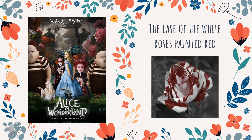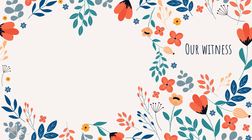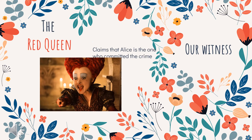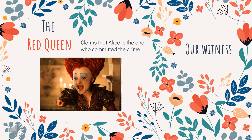If you've seen the movie, you know how grave of an offense it is for the Queen's beloved roses to have been painted. This is why our investigation must be handled diligently. To begin our investigation, we have our witness of the crime, which is the Red Queen, who claims that Alice is the one who painted the white roses in her garden red. Although, due to some heavy bias on her part towards Alice, her words cannot be trusted alone. This is where VNTR analysis comes into play.